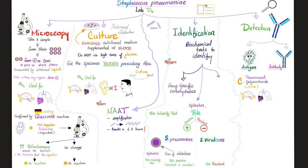I saw gram-positive cocci arranged in pairs or short chains. However, don't forget that we have many streptococci out there. How can I confirm that this was actually Streptococcus pneumoniae and not any other strep? You can confirm the diagnosis with a Quellung reaction.